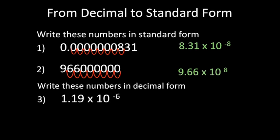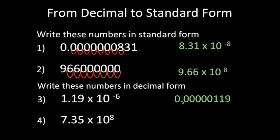Now let's do it backwards — the given is in standard form and we write it in decimal form. Take 1.19 times 10 to the negative 6. The negative power tells us this is a small number. The decimal point starts between 1 and 1. You count 6 places to the left: 1, 2, 3, 4, 5, 6. That gives you the decimal form.